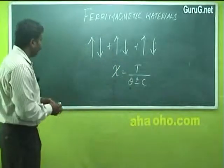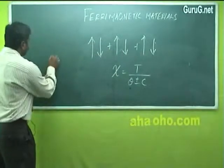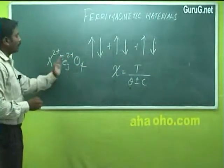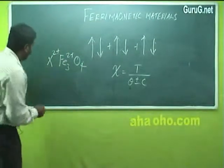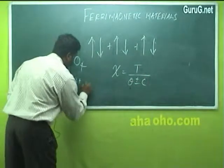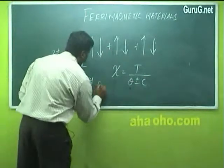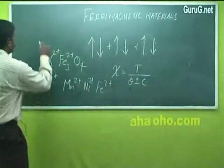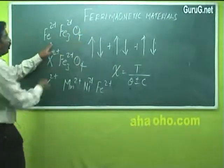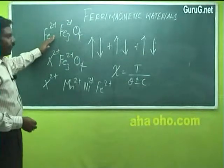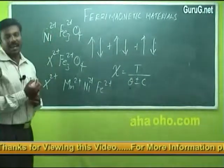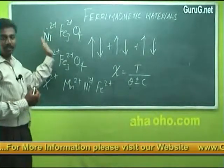The structure of ferromagnetic materials is represented as X²⁺ Fe₃²⁺ O₄. This is the basic representation of a ferrite material, where X²⁺ may be any ion such as Mn²⁺, Ni²⁺, or Fe²⁺. If written as Fe²⁺ Fe₃²⁺ O₄, it is called ferrospinel. If X is Ni²⁺, it is called nickel ferrite; if Mg, it is manganese ferrite. Depending upon the X value, the type of ferrite changes.